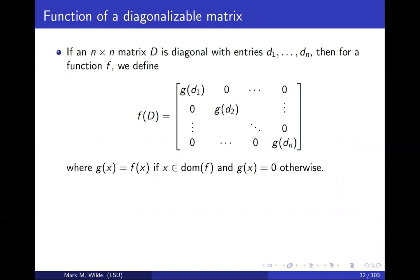What is called the function, a function of a matrix. So let's suppose that we have a function f, and we want to compute this function of a diagonal matrix. Suppose the original diagonal matrix has entries d1 through dn on the diagonal. Then the way you apply the function to a matrix is just apply the function to each of the elements along the diagonal. But you only do it if x is in the domain of the function, and otherwise you just set it equal to zero. That's one method of handling such that you get a matrix at the output of this process.